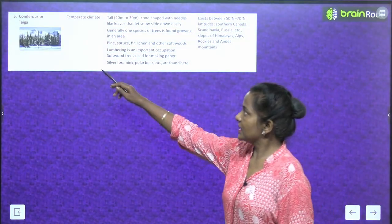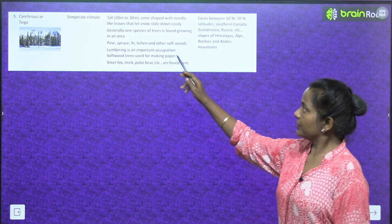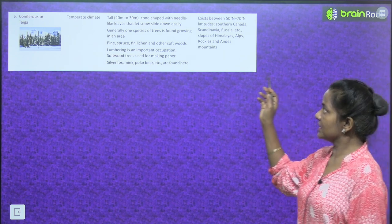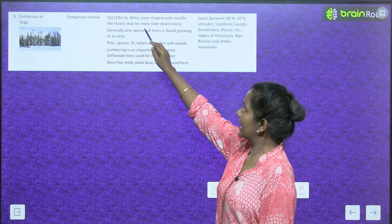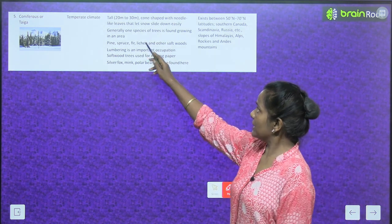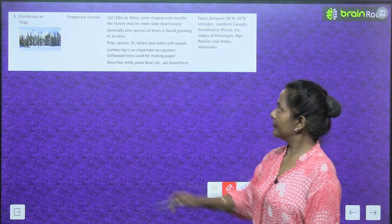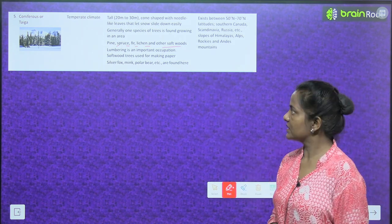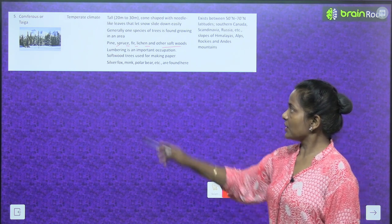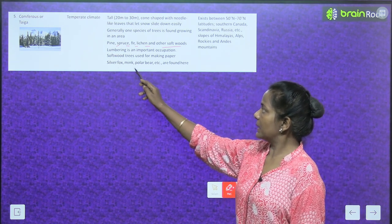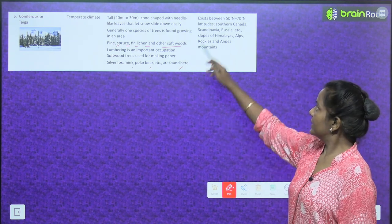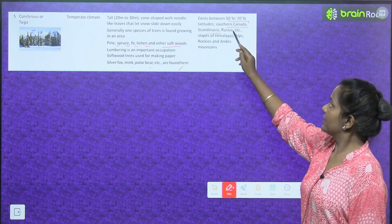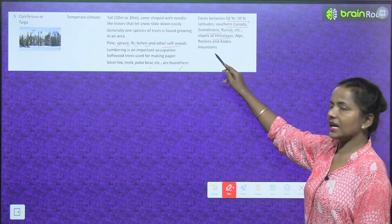The fifth biome is coniferous or taiga forest. Climate is temperate. Trees are tall — 20 to 30 meters — cone-shaped with needle-like leaves that let snow slide down easily. Generally one species of tree grows in an area: pine, spruce, fir, lichen, and other softwoods. Lumbering is an important occupation; softwood trees are used for making paper. Silver fox, mink, and polar bear are found here. It exists between 50° to 70° north latitudes — southern Canada, Scandinavia, Russia, slopes of the Himalayas, Alps, Rockies, and Andes mountains.